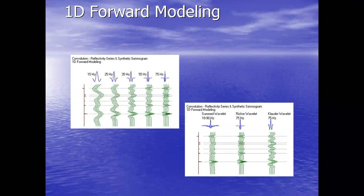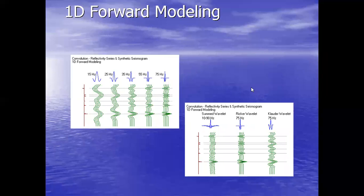You can see the convolution process — the reflection coefficient series and the synthetic seismogram ranging from 10-19 Hz up to 75 Hz. These are basically different wavelet types: the summed wavelet, recorded wavelet, clouded wavelet — it is up to you which kind of wavelet you are using in seismic data acquisition and to make your model. In the first picture you can see the thin bed is there due to high frequency, but in the first picture you can't detect the thin beds because we have low frequency there — so we try to enhance our high frequencies.